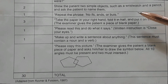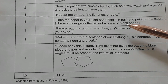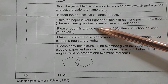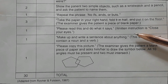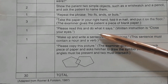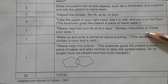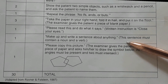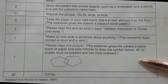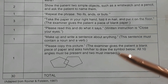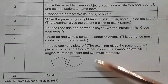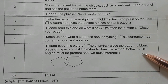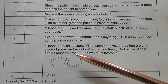For 1 point, repetition: ask the patient to repeat the phrase 'No ifs, ands, or buts.' For 3 points, three-stage command: take the paper in your right hand, fold it in half, and put it on the floor. For 1 point, reading: ask the patient to read and do what it says — the written instruction is 'Close your eyes.' For 1 point, writing: make up and write a sentence about anything — the sentence must contain a noun and a verb. Finally, for 1 point, copying: ask the patient to copy a picture of intersecting pentagons, where all ten angles must be present and two must intersect.